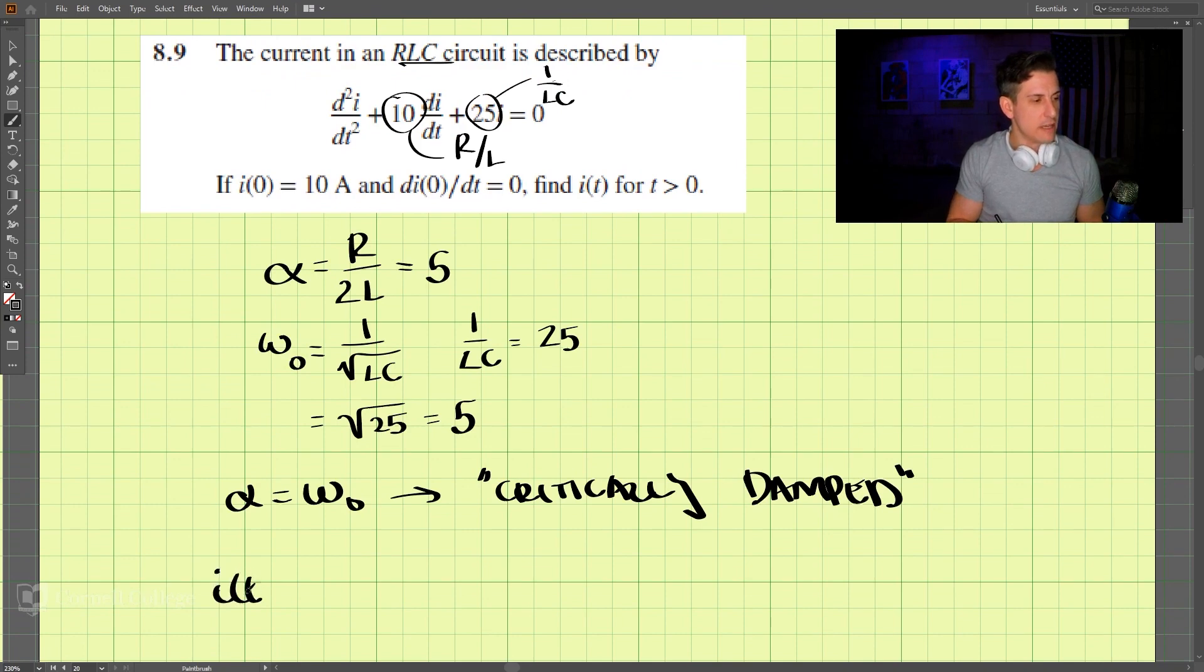We have i(t) is equal to A2 plus A1, or depending on how you want to do it, A1 plus A2 times t, e to the negative alpha times t.